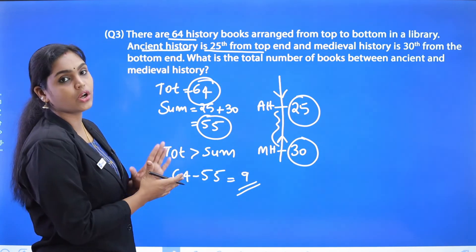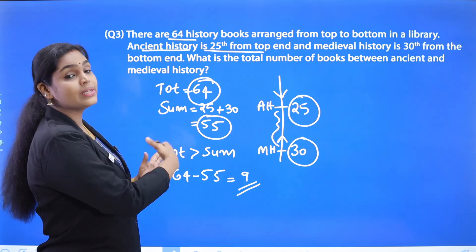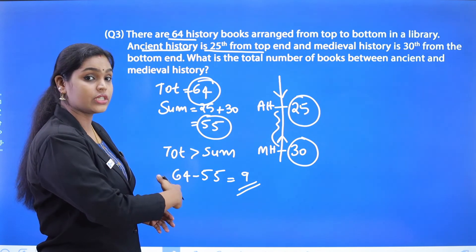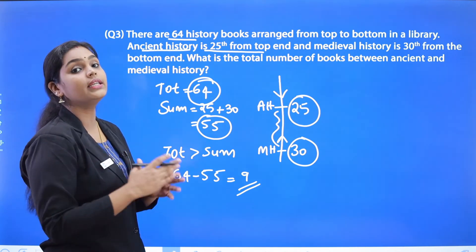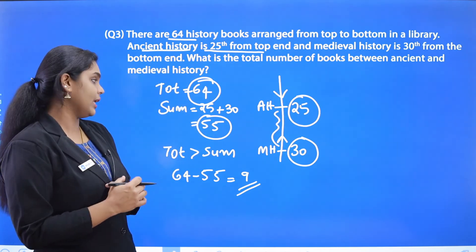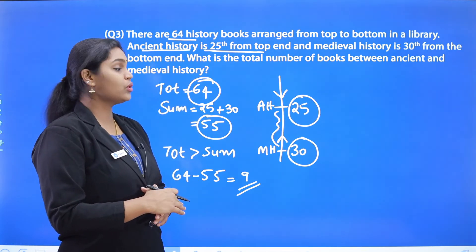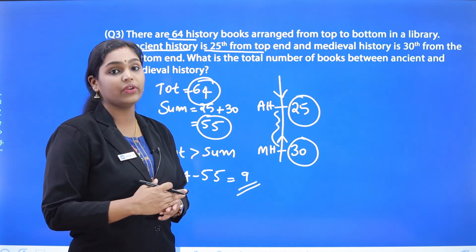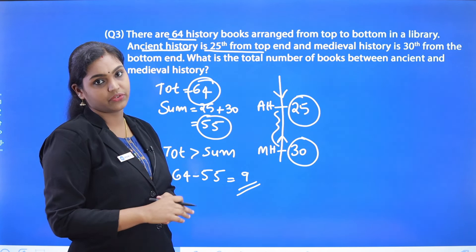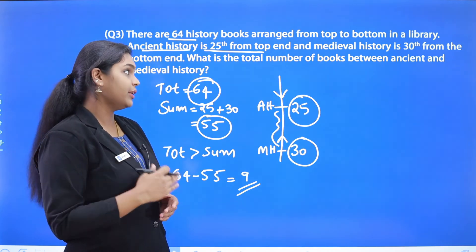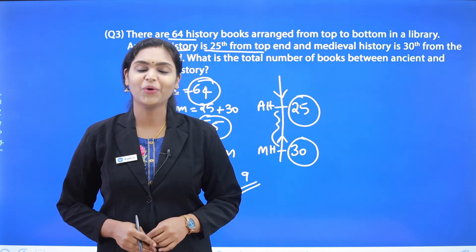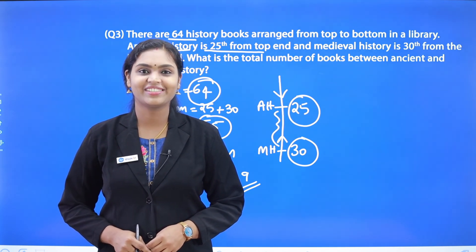To summarize the second concept: if the total value is greater than the sum, the number of elements in between is total minus sum. In the previous case, when sum was greater than total, the formula was: sum minus total minus 2, to avoid repetition. These are the basic concepts in order and ranking. Hope you got it clear. Thank you, see you again in the next session.